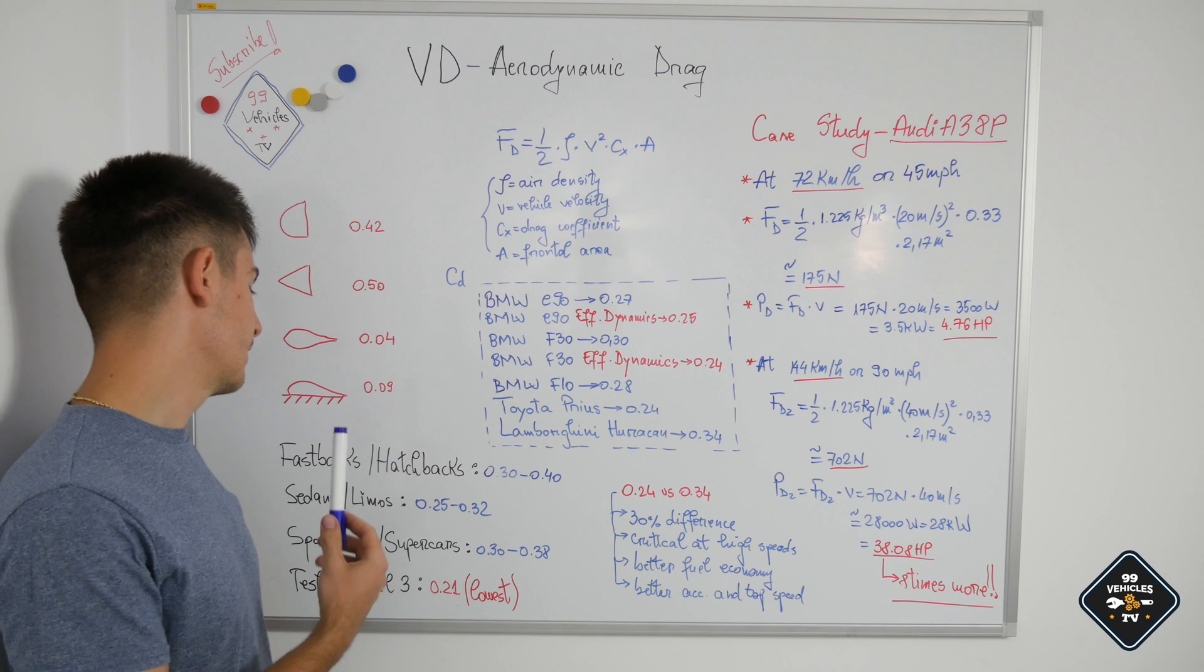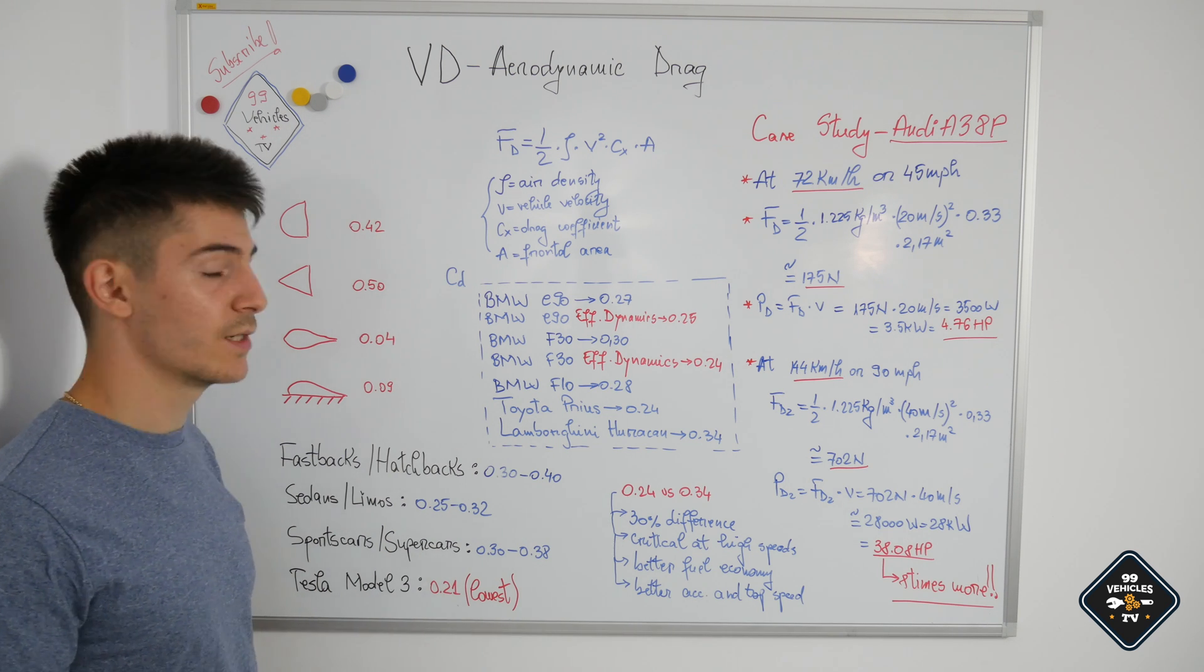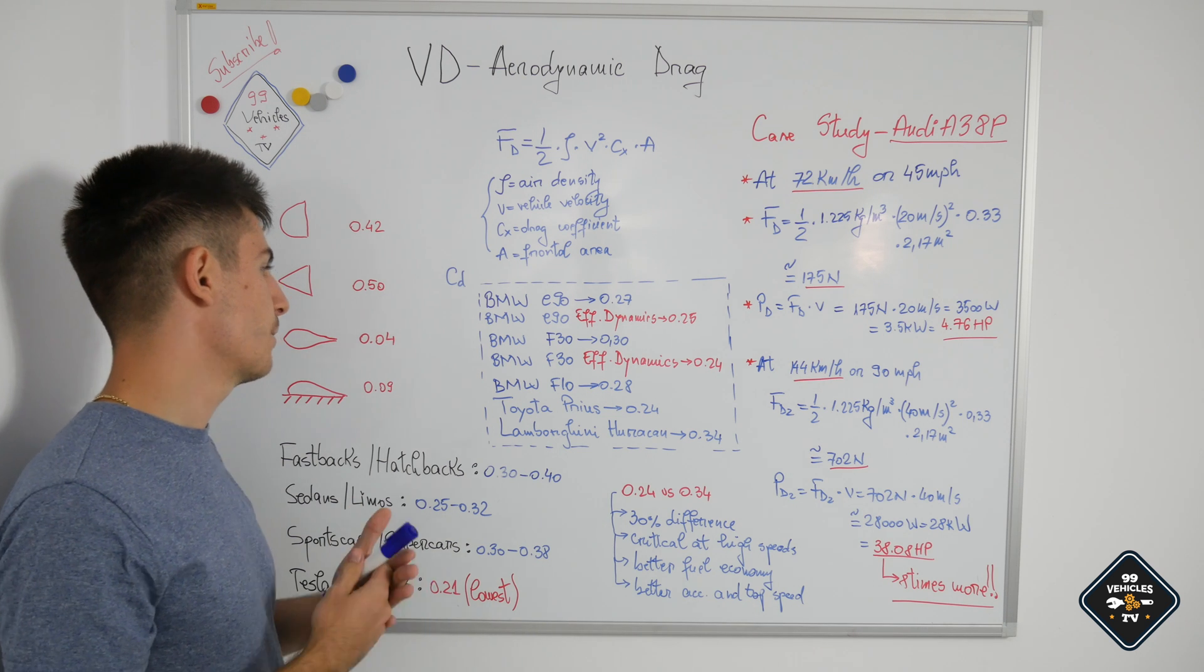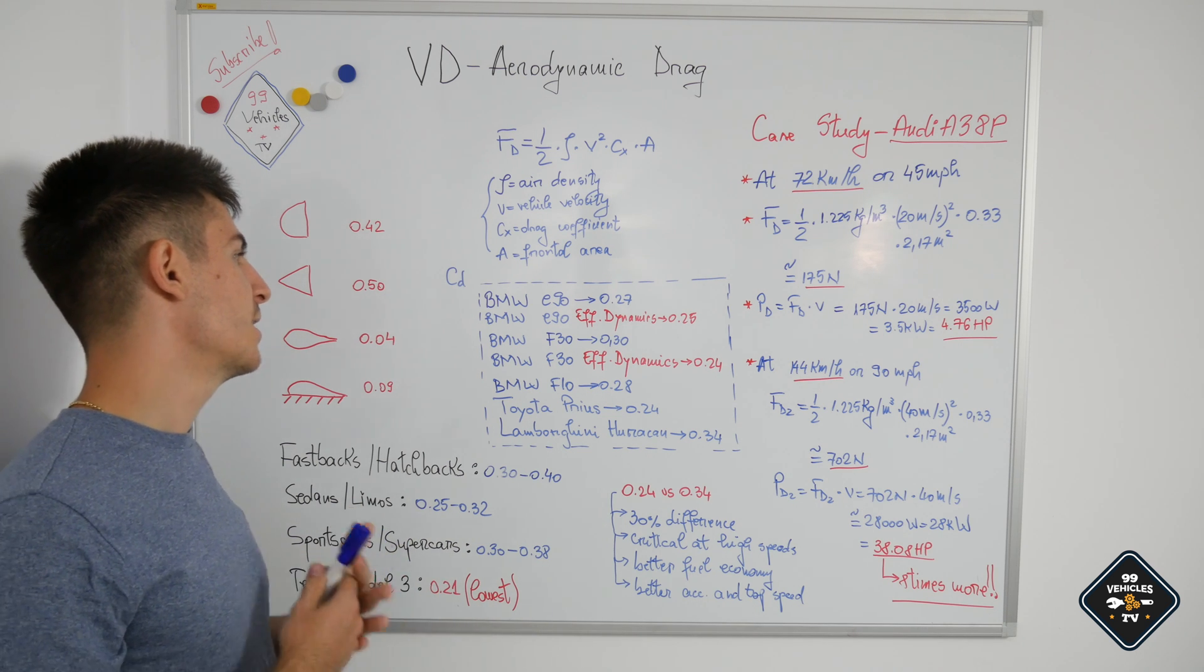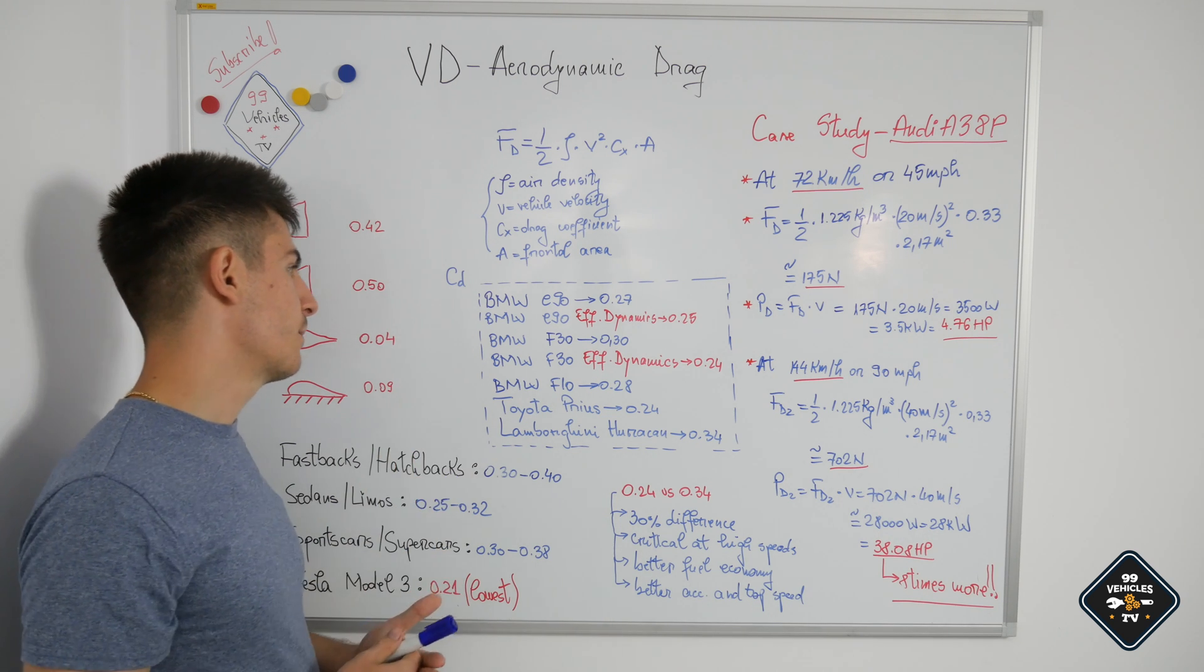The Tesla Model 3 has the lowest drag coefficient in a production car, 0.21, and I have made a short list over here with a few cars, mainly from BMW, just to compare the aerodynamic drag coefficients.